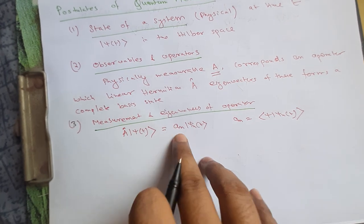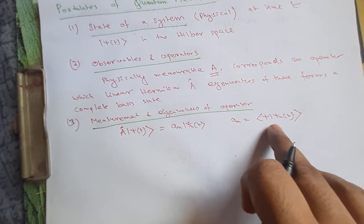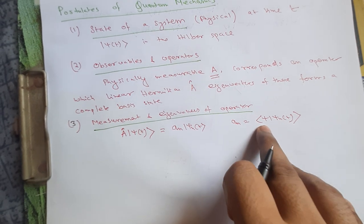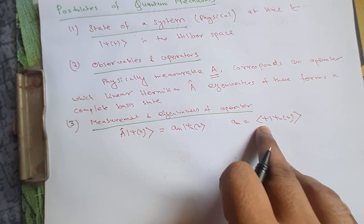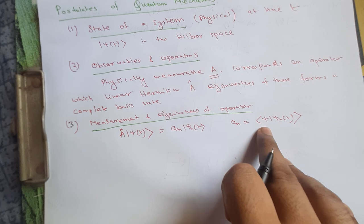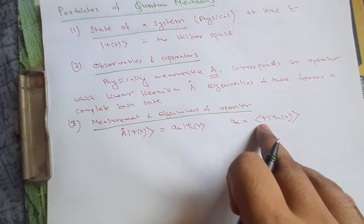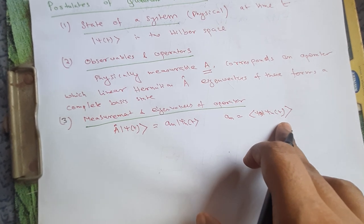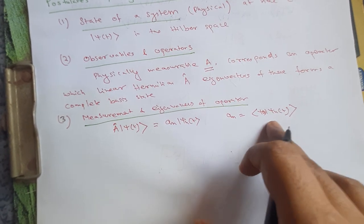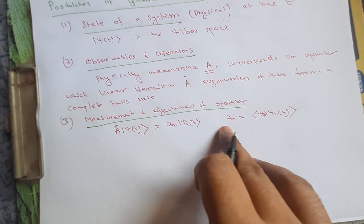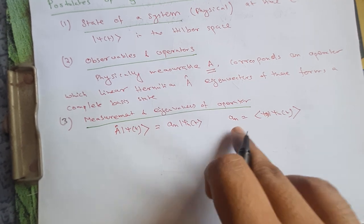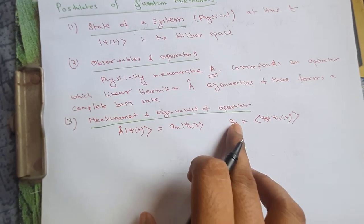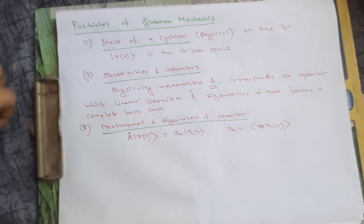This eigenvalue can be thought of as a projection of the main eigenstate ψ(t) onto the eigenvector ψₙ(t). This is the physical interpretation of the eigenvalue. This completes the third postulate: measurement and eigenvalues of the operator.